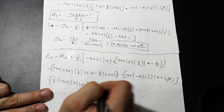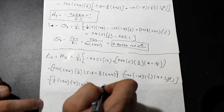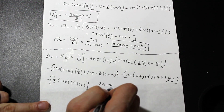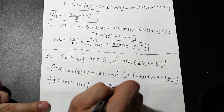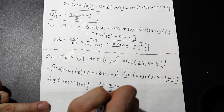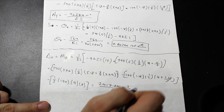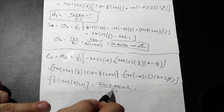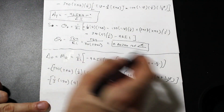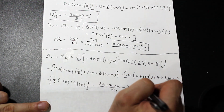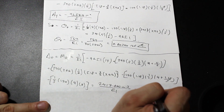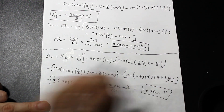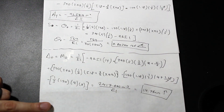Calculating all of that gives 2417 kilonewton·meter³ over EI. Plugging in EI gives 14.76 millimeters upward — and that is the deflection at D.